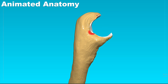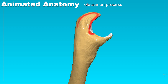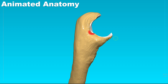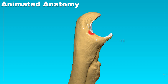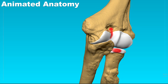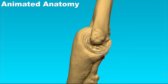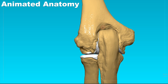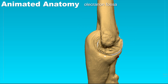This concave shape is created by the olecranon process and the coronoid process. The coronoid process enters the coronoid fossa when the elbow joint is flexed, and the olecranon process enters the olecranon fossa when the elbow joint is extended.